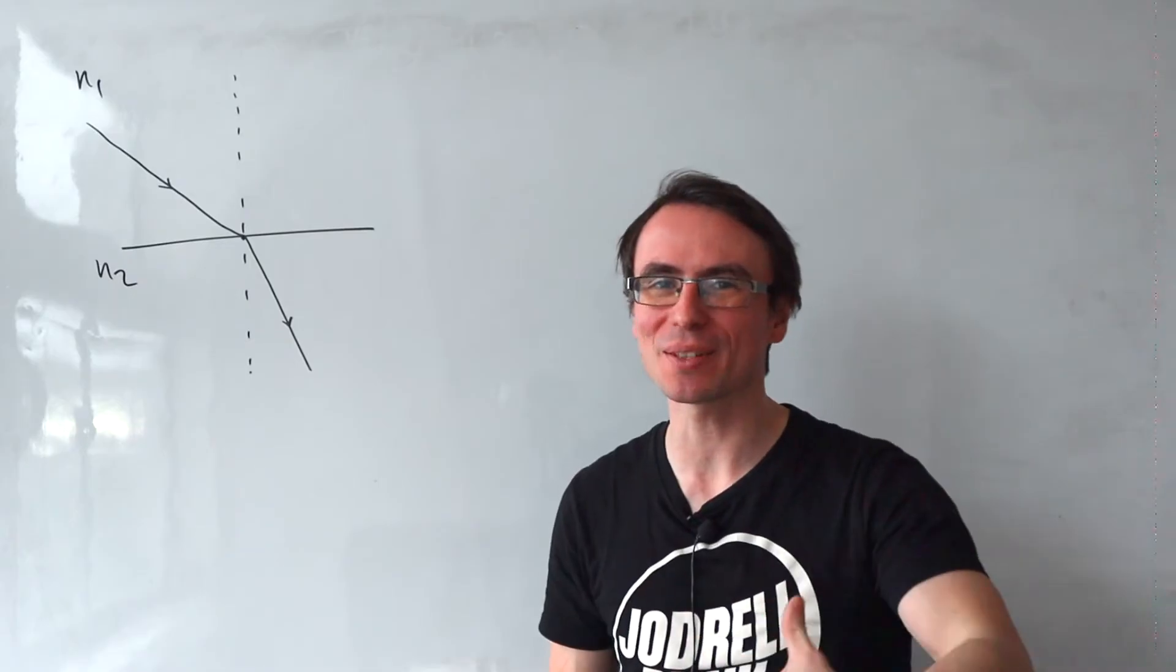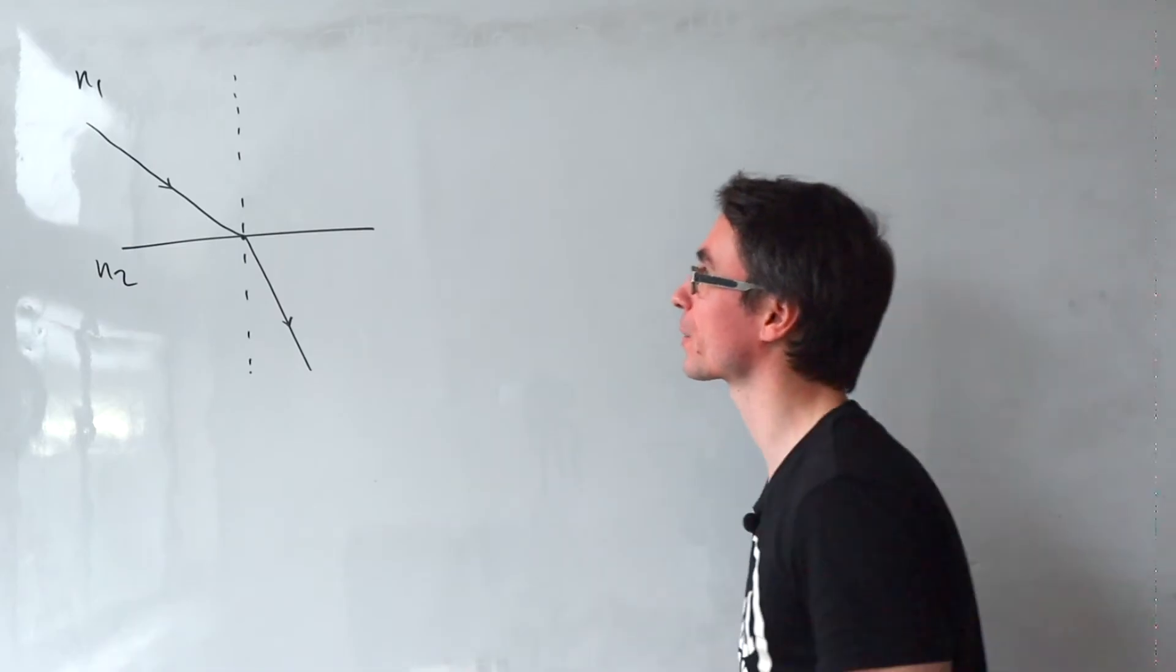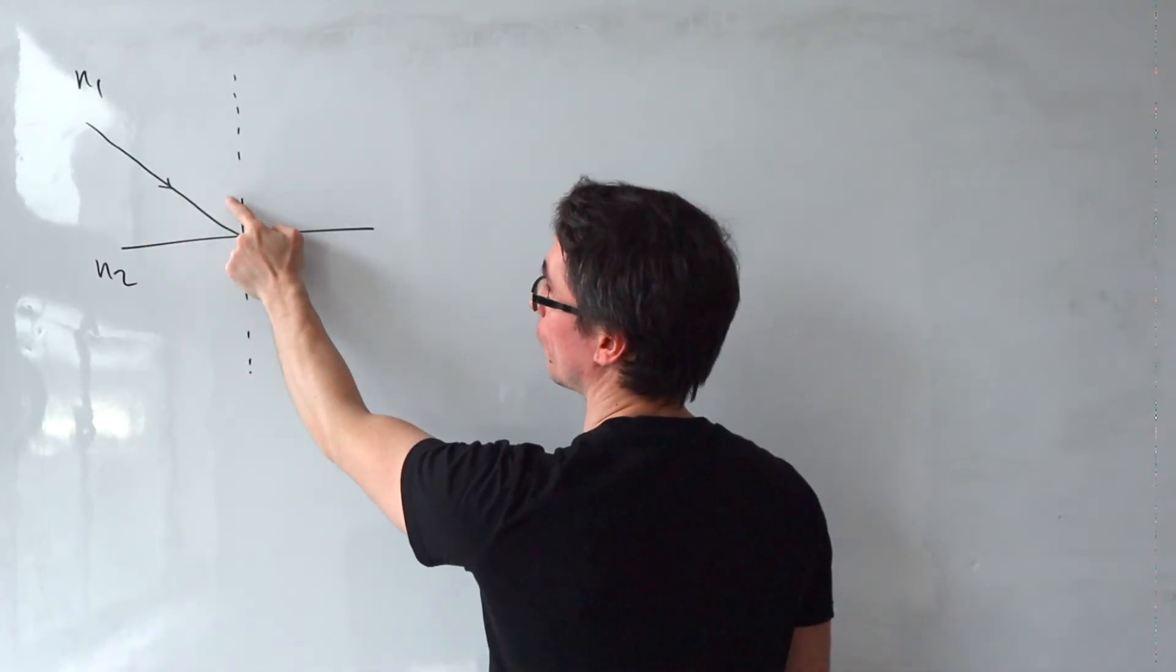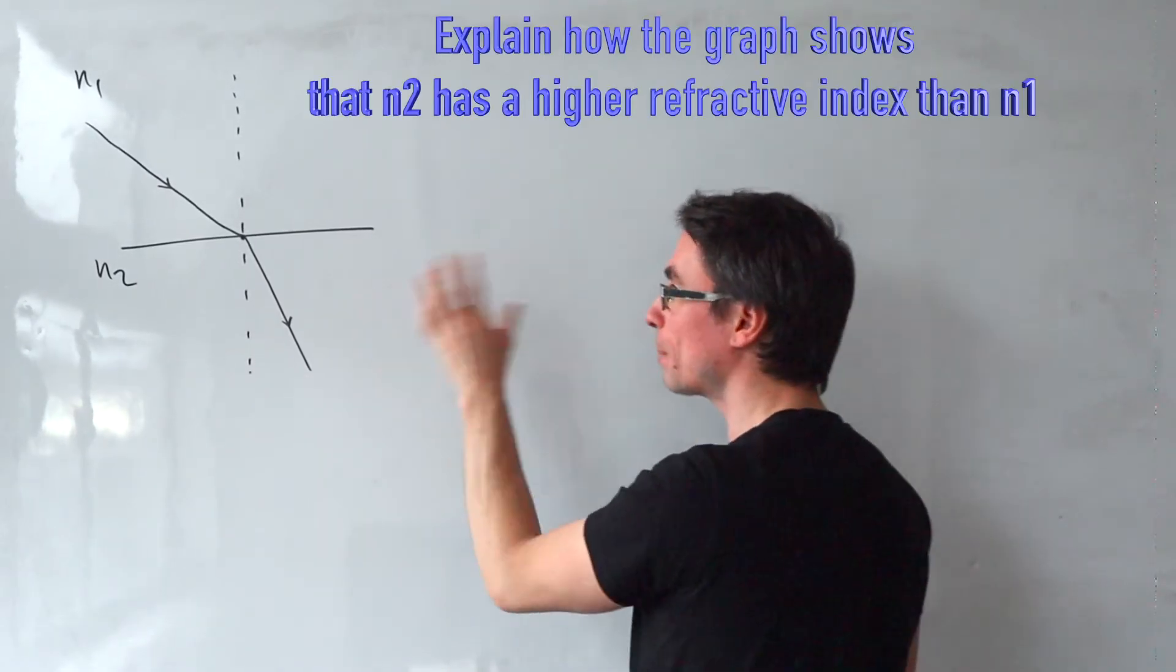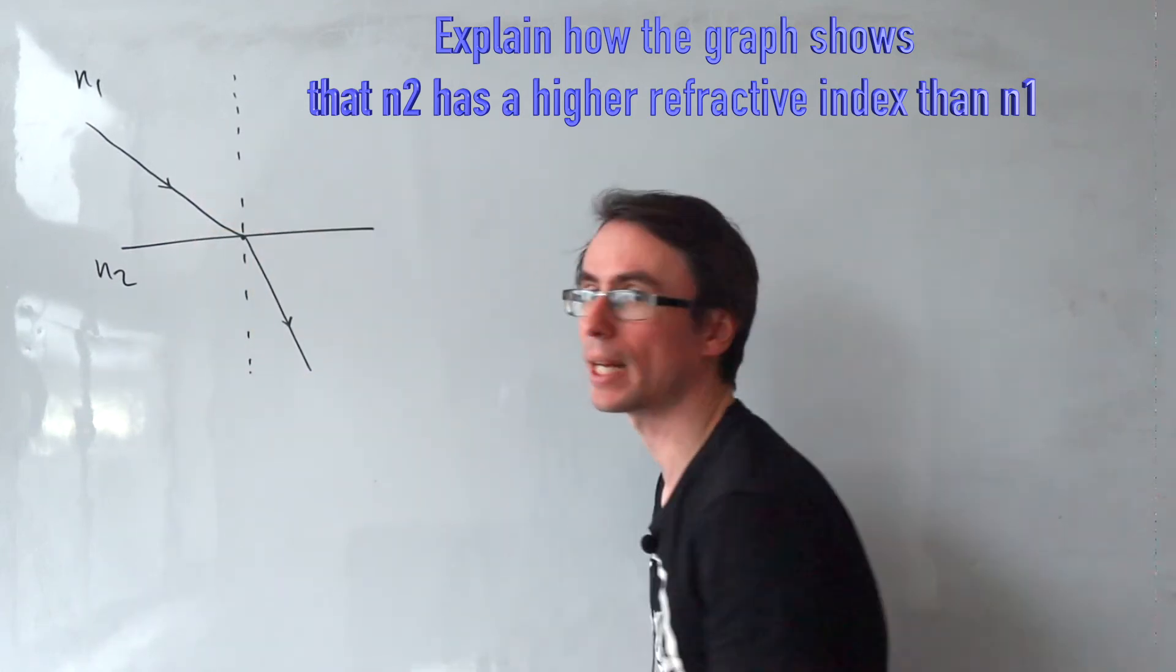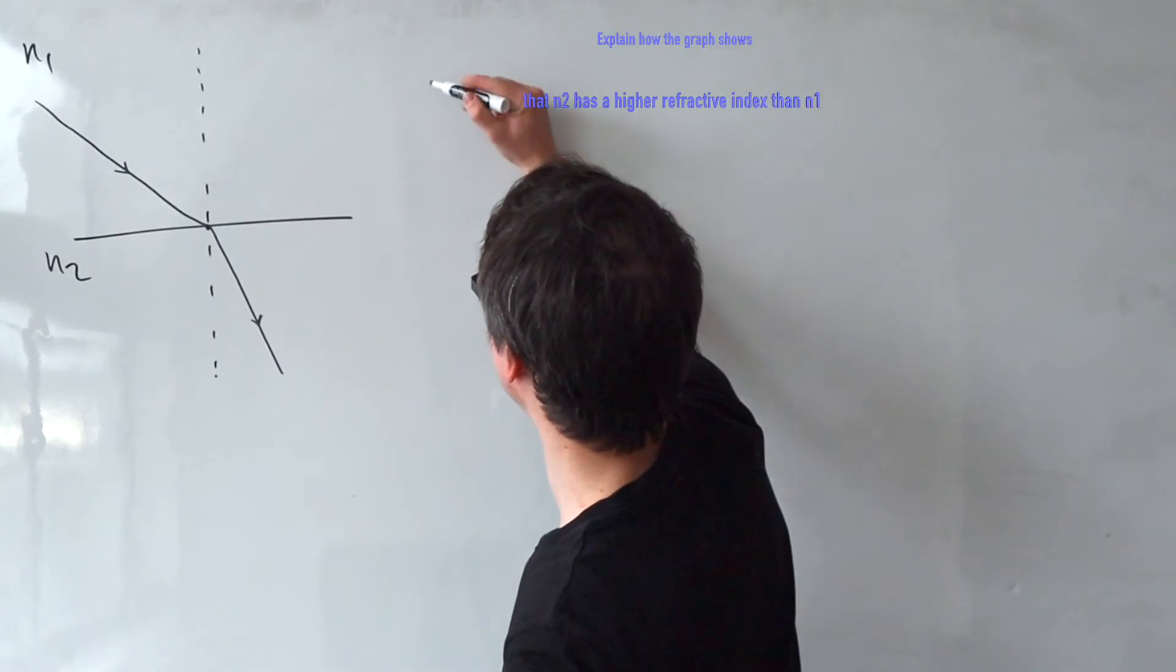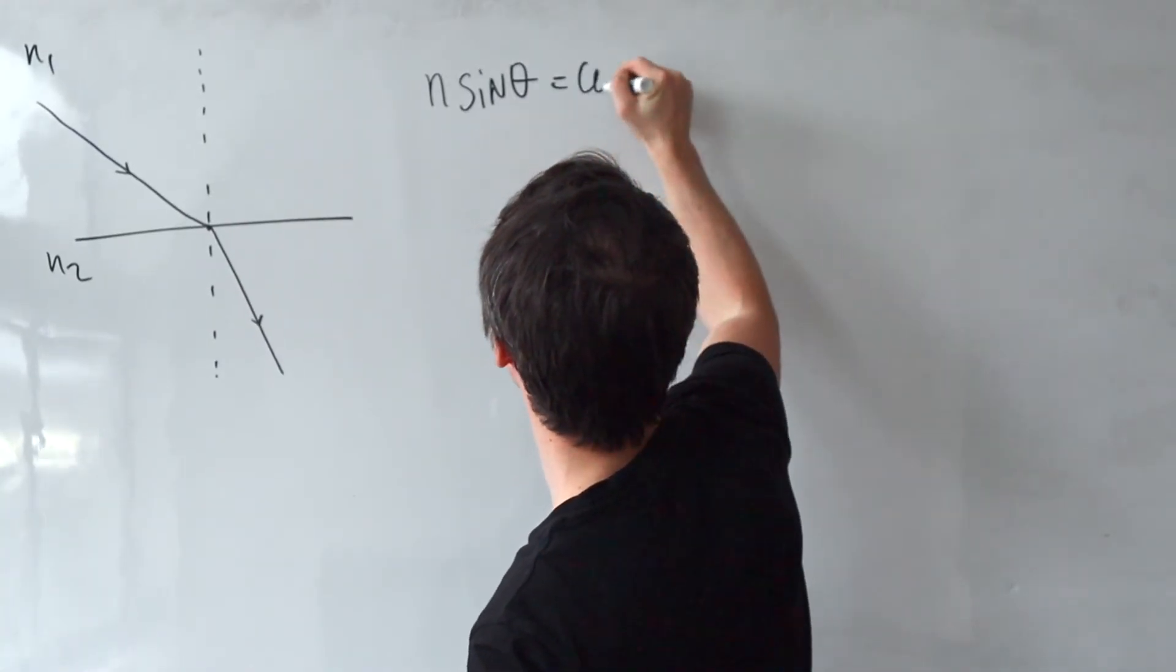Explanation questions in A-level physics are hard, and it's usually the place where a lot of students lose marks. So, can we explain looking at this graph, we have a rate that goes from a substance of refractive index N1 into a substance of refractive index N2. Explain how this graph shows that the refractive index N2 is greater than N1.